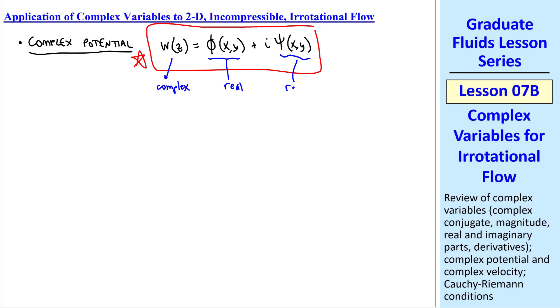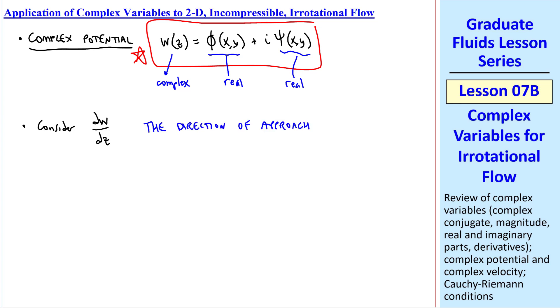Now let's consider the derivative dw dz, but as I mentioned, the direction of approach of delta z when taking a derivative does not matter. For example, let's let delta z equal delta x. In our xy plane, some small increment delta z is horizontal in the x direction. In other words, we move horizontally to find the derivative.